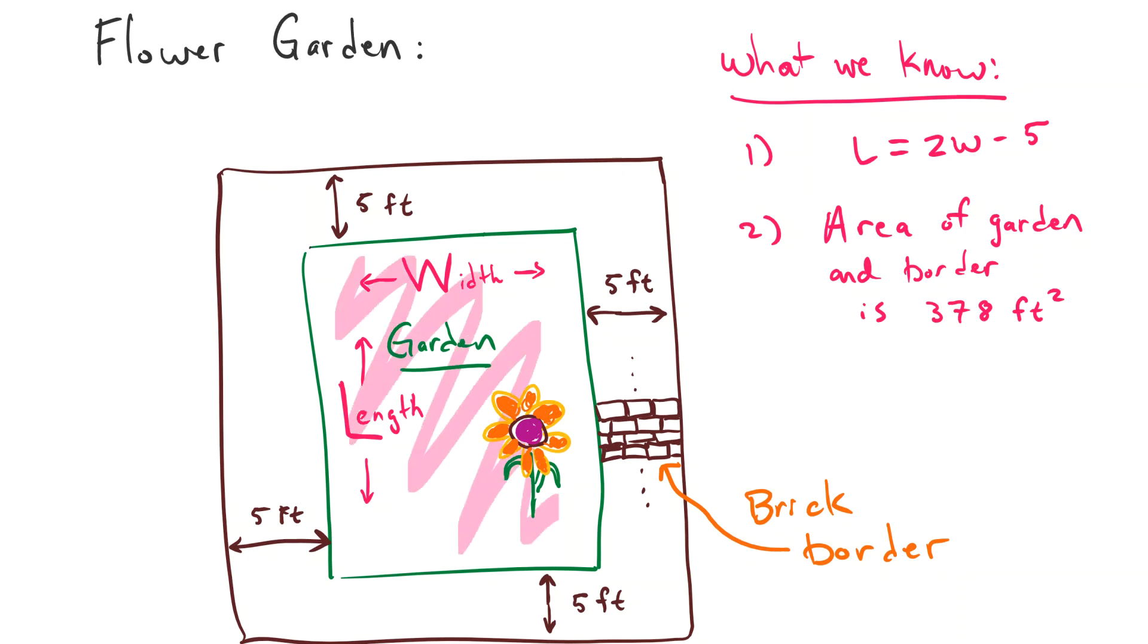And there's a five-foot wide brick walkway pathway that goes around the flower garden, and that is right there. So we have the width of the flower garden, we have the length of the flower garden.